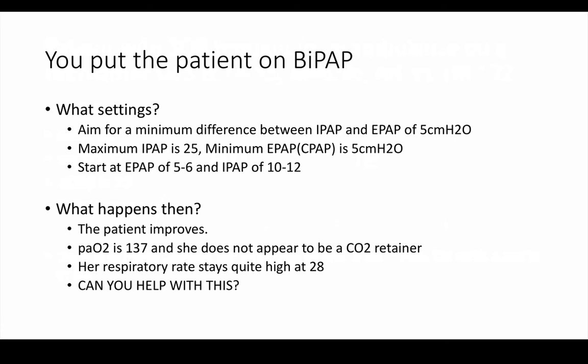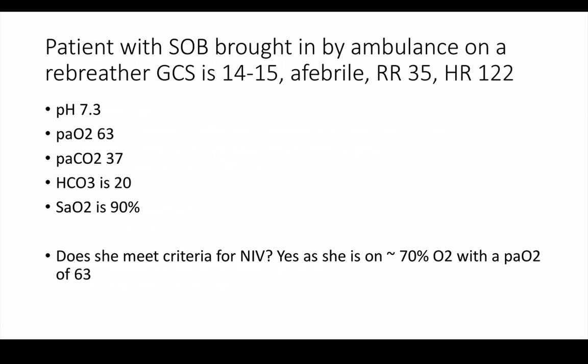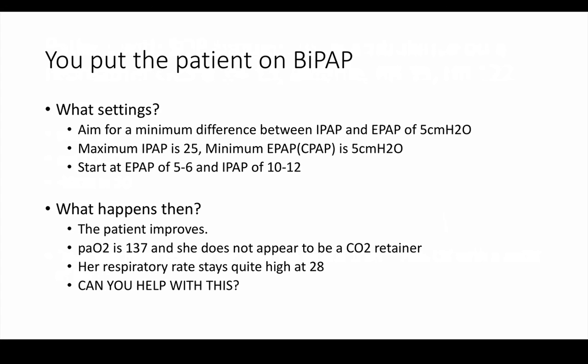You put this patient on BiPAP. What settings? Well, the lowest level you can start the EPAP at is 5 centimetres, and there should be a difference between your IPAP and your EPAP — that pressure support — of a minimum of 5 centimetres. Your IPAP cannot go higher than 25 centimetres of water. I usually start at an EPAP of 5 and an IPAP of 10, or an EPAP of 6 and an IPAP of 12. The patient does improve — their PaO2 goes to 137 and the CO2 doesn't increase, so she's not a retainer. The respiratory rate dropped from 35 to 28, but the work of breathing is still quite high.